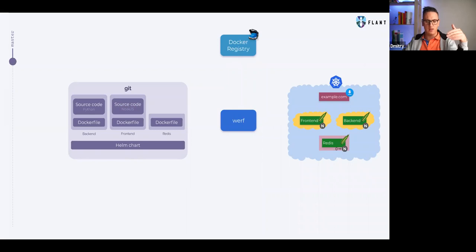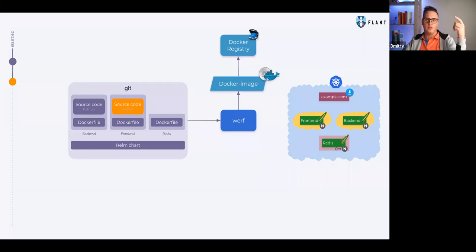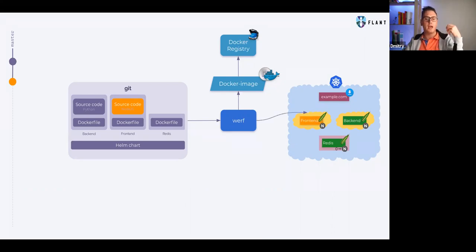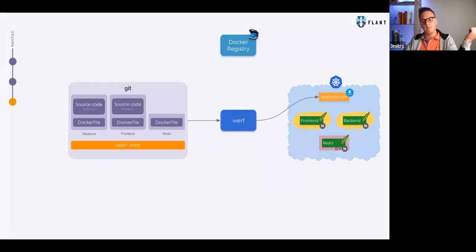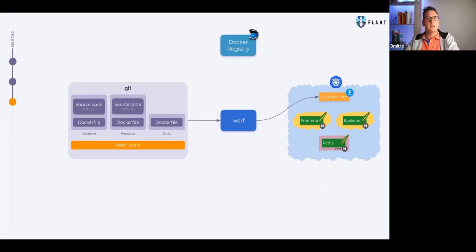This motivates users to make changes to the single source of truth in git rather than directly to Kubernetes. If we change something - for example the frontend source code - and rerun werf, it will detect that only one application changed, rebuild only that one image, and roll out only that one deployment. The same applies to Helm chart changes: if only the ingress manifest changed, only that ingress resource will change in Kubernetes.